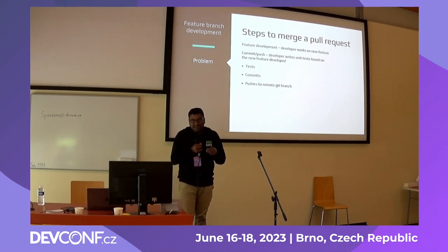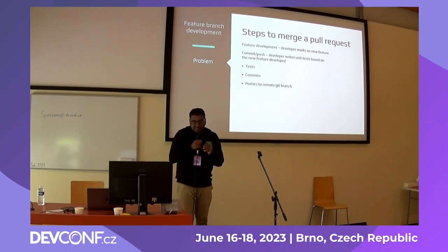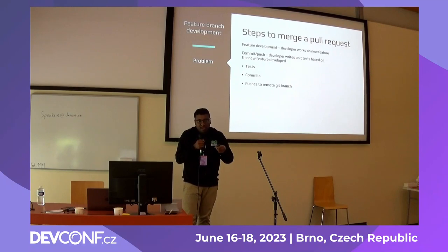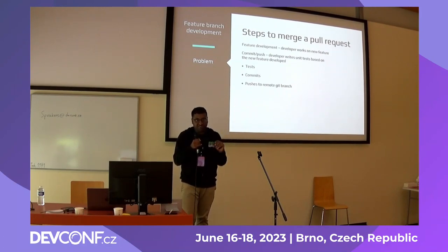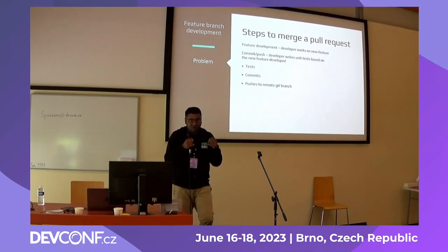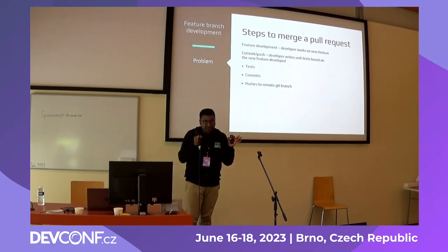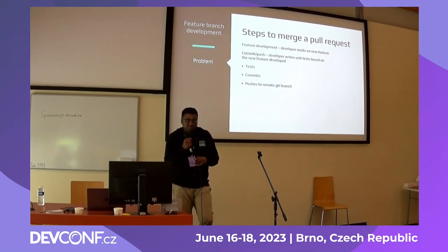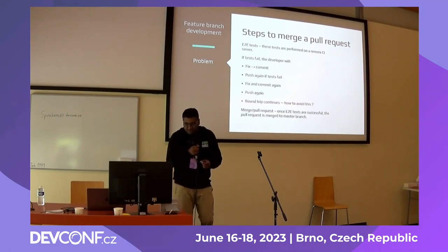When a developer does testing, they only run local unit tests, not end-to-end tests. End-to-end tests are such a pain that you can't run them locally. When raising a pull request, the CI triggers end-to-end tests on a remote CI/CD server, and it takes at least a couple of hours to run. If something breaks, the developer loses hours understanding what went wrong.